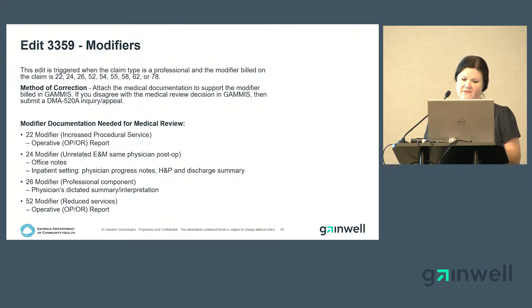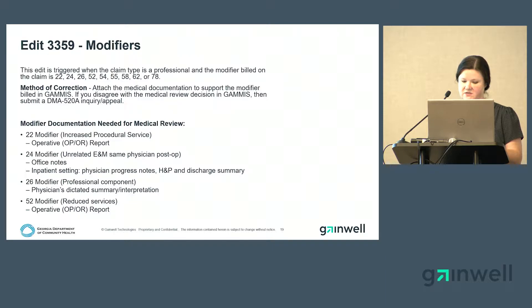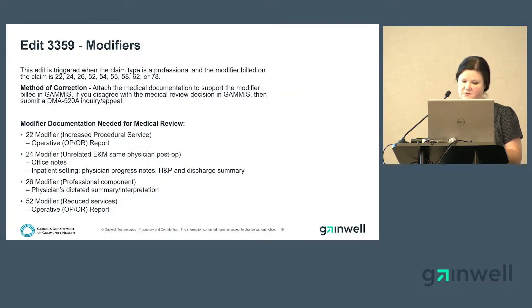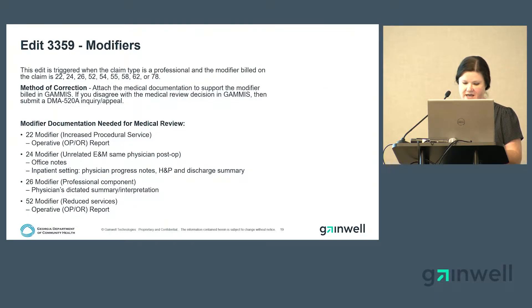Edit 3359 is for modifiers. A modifier provides the means to report or indicate that a service or procedure has been altered by some specific circumstance but not changed in definition or code. Alliant reviews modifiers 22, 24, 26, 52, 54, 55, 58, 62, and 78. For the method of correction, attach medical documentation to support the modifier billed in GAMIS. If you disagree with the medical review decision in GAMIS, submit a DMA 520A inquiry appeal.